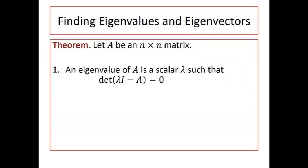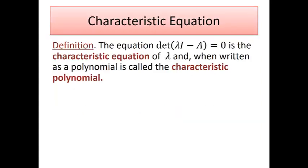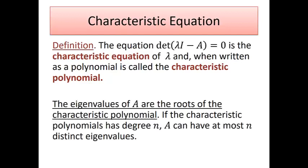In our last video, we went through the theory of eigenvectors and eigenvalues. We saw that an eigenvalue of A will be a scalar lambda such that the determinant of lambda I minus A equals 0, and the eigenvectors of A corresponding to lambda are the non-zero solutions of the system (lambda I minus A)x equals 0.